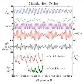Milankovitch did not study apsidal precession. It was discovered more recently and measured, relative to Earth's orbit, to have a period of about 70,000 years.